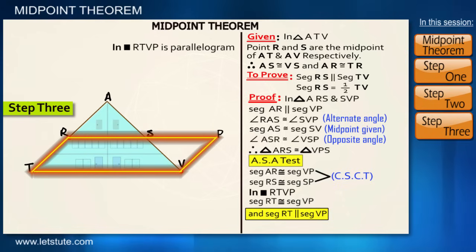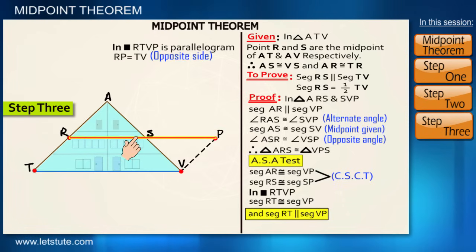Quadrilateral RTVP is a parallelogram, so RP is equal to TV because they are opposite sides of a parallelogram, correct? Now RP is nothing but RS plus SP, but already we have proved that RS is equal to SP, it means RS is half of the RP, right?